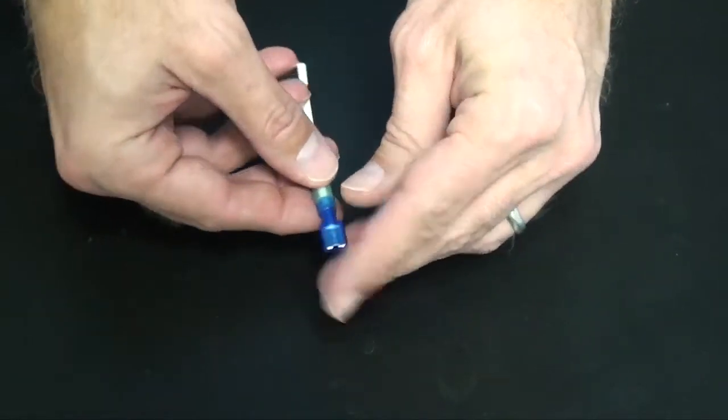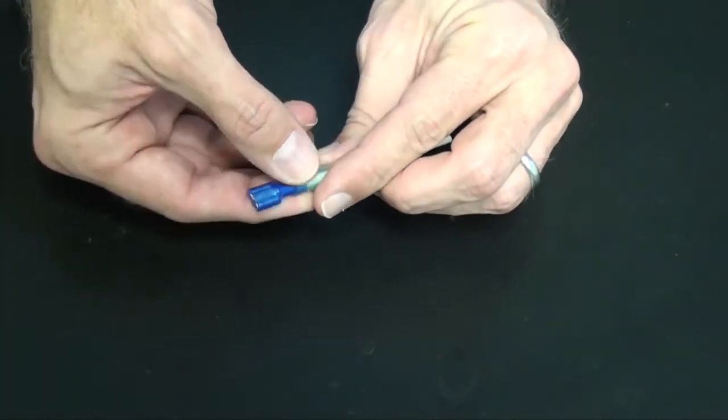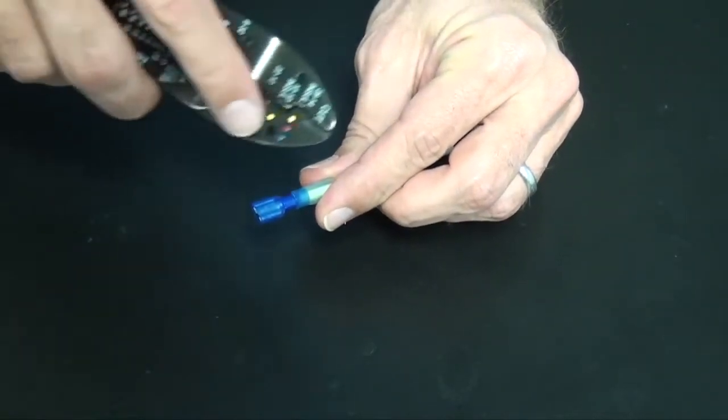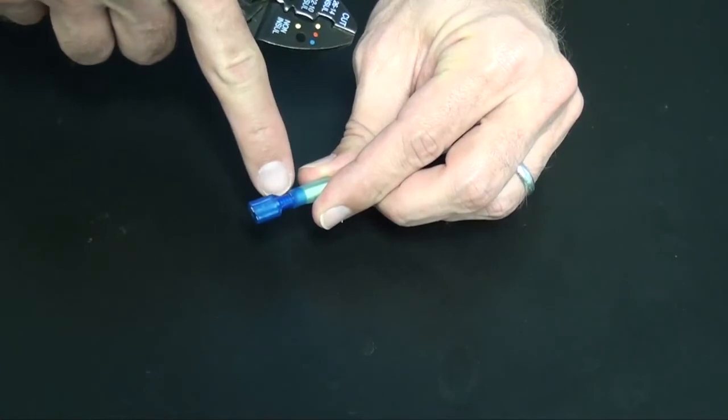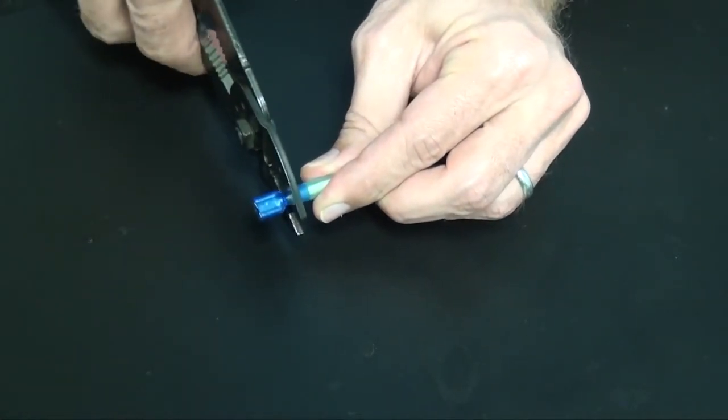Insert your wire into the barrel, making sure that the ends of your wire butt up against the terminal's wire stop. Using the blue crimp nest of your crimping tool, align the tool in the middle of the crimp area of your nylon terminal and crimp the connector's barrel.